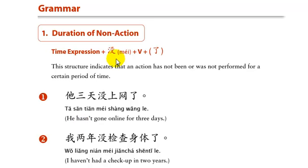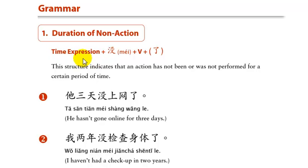In Chinese, here is the structure used to express this meaning. I suggest you memorize this structure so you can pull it up whenever you need it. The structure starts with the period of time. Let's make up our own example: I haven't skied in two years. We have the time expression first — 两年 — so 我两年...